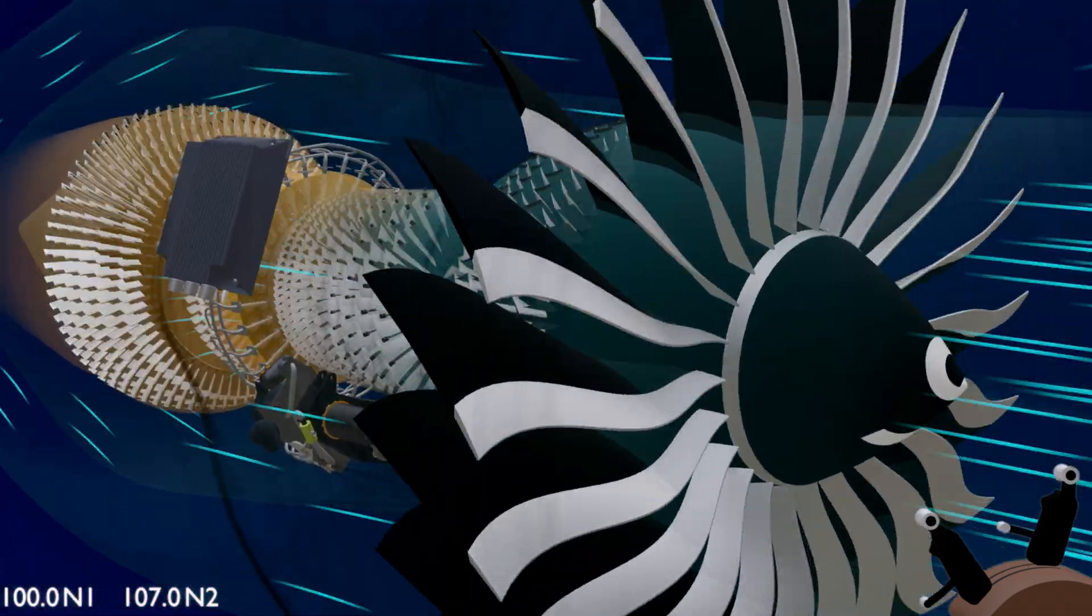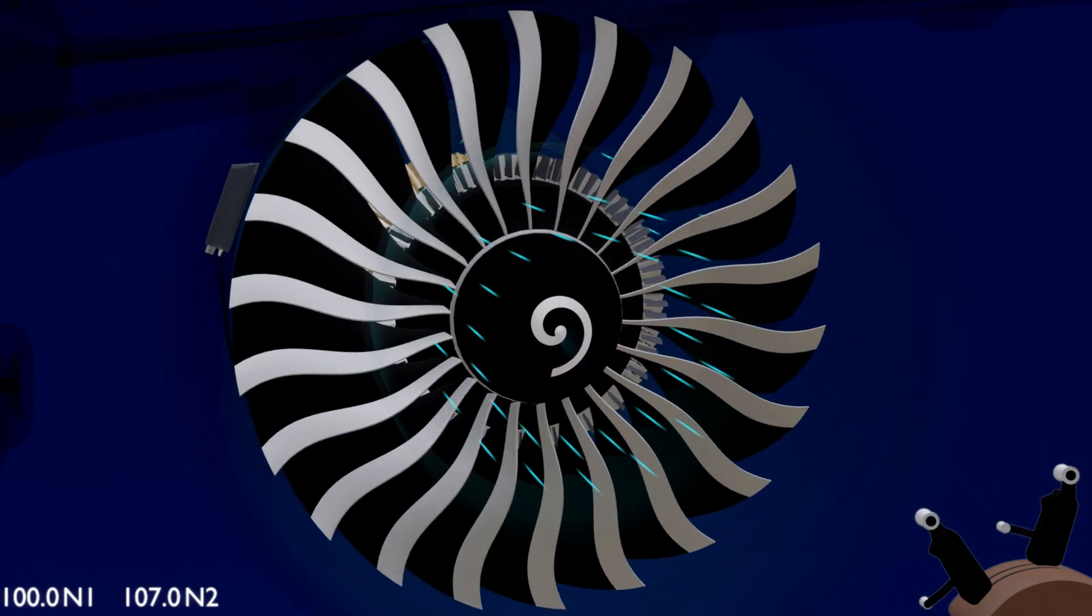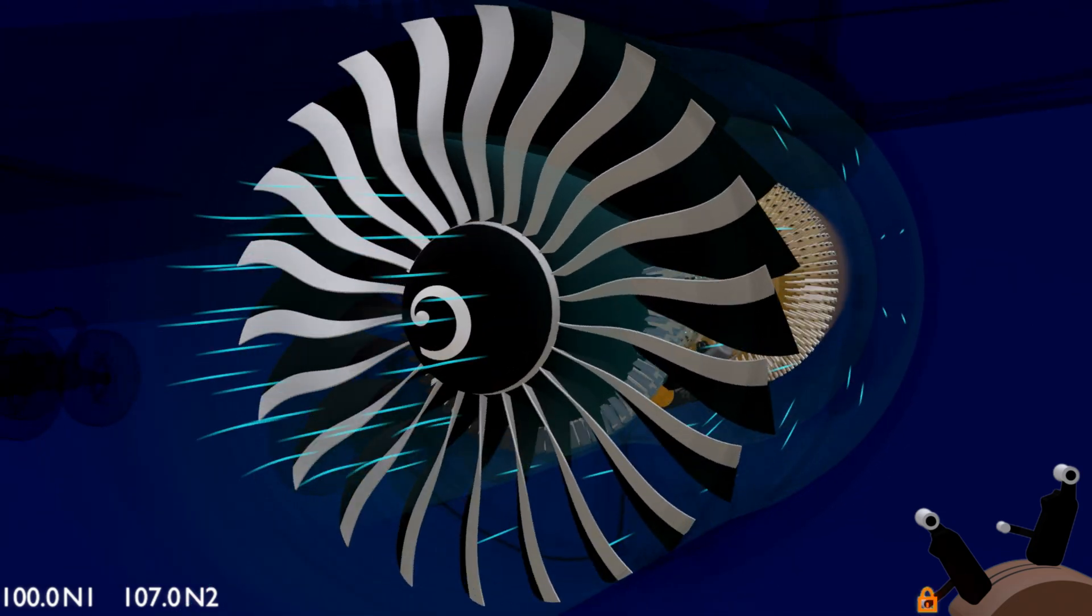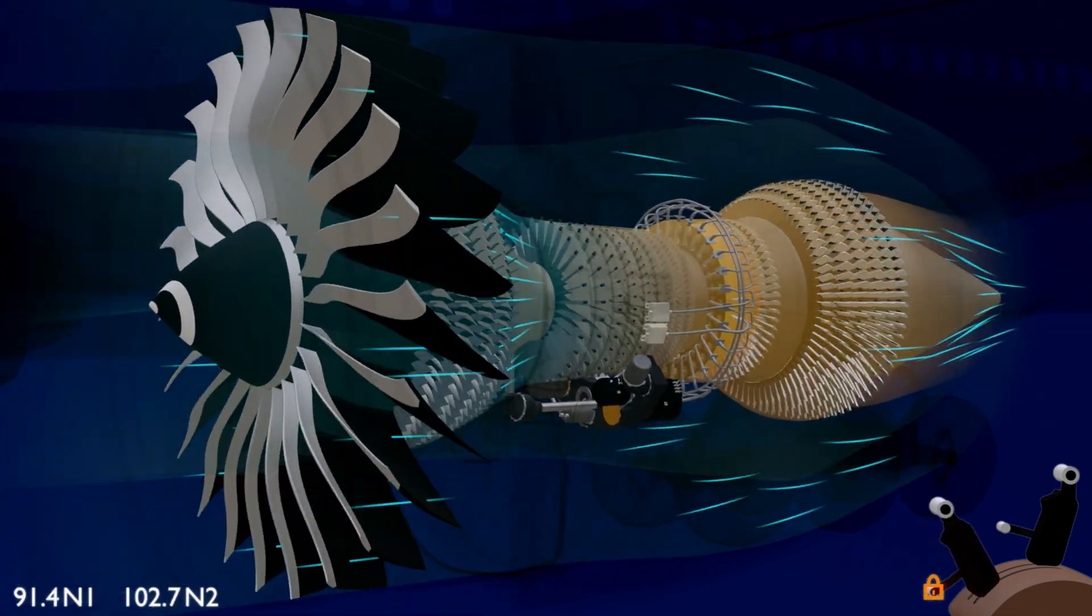Now let's operate the engine thrust reverser. The forward and the reverse thrust lever have an interlock mechanism that prevents simultaneous operation. When one lever is in use, the other gets locked. Therefore to use the reverse thrust lever, the forward thrust lever has to be moved to idle.